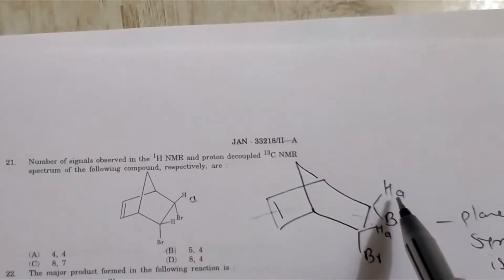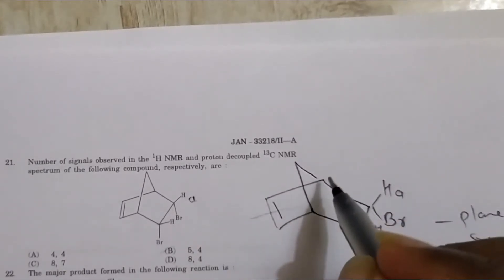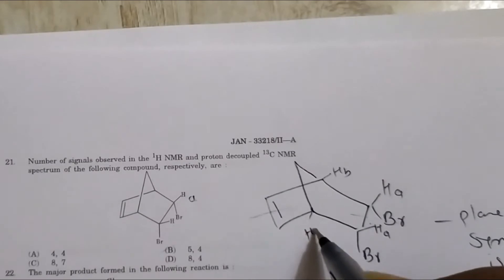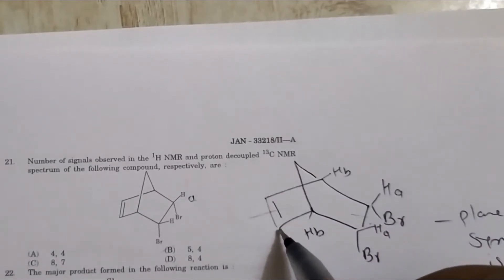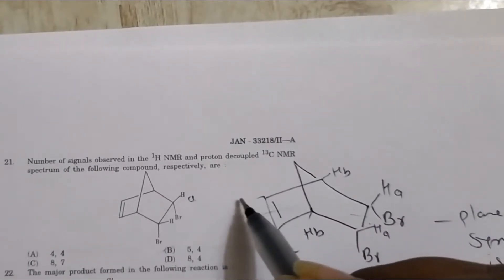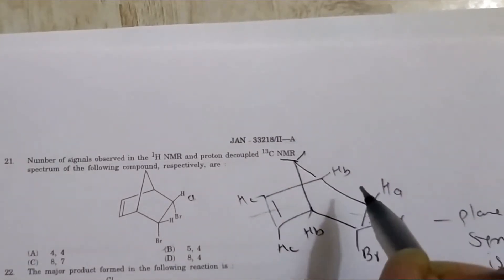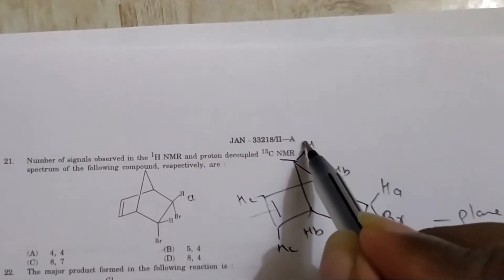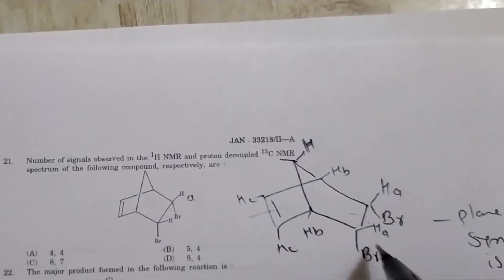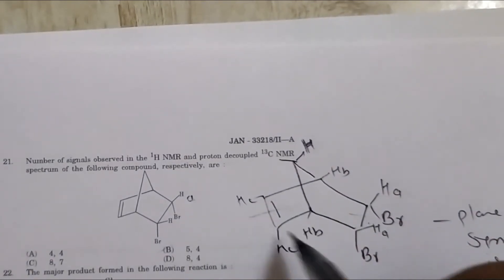So here, this is HA, so this is HB, here also is HB. This is HC and this is also HC. See, only this proton is different because this hydrogen - this side environment is different and this side environment is different.